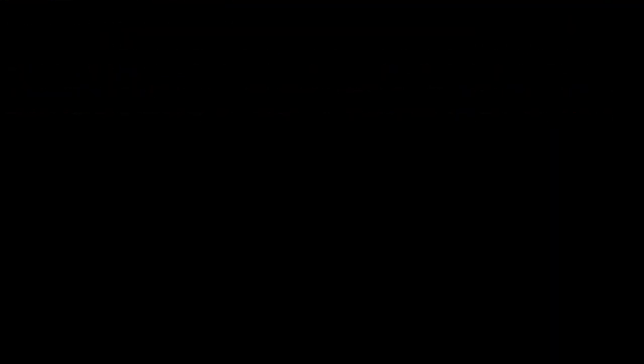Through empirical testing and dimensional analysis, it has been determined that the coefficient of friction would equal 1.328 divided by the square root of the Reynolds number taken across the chord length. Well, now we have this random variable called the drag friction coefficient. Now what?